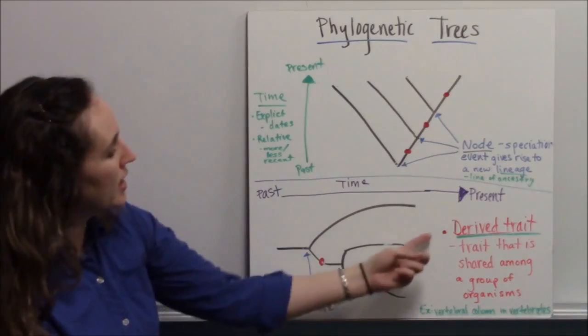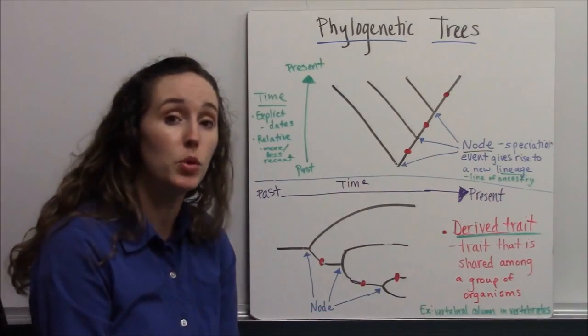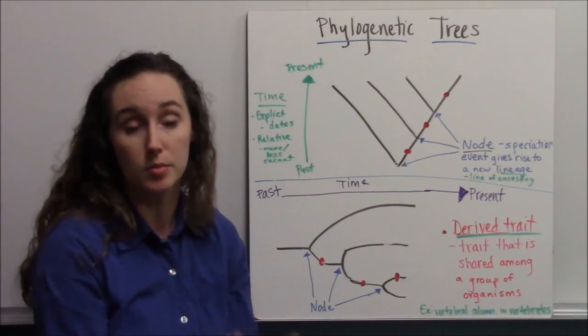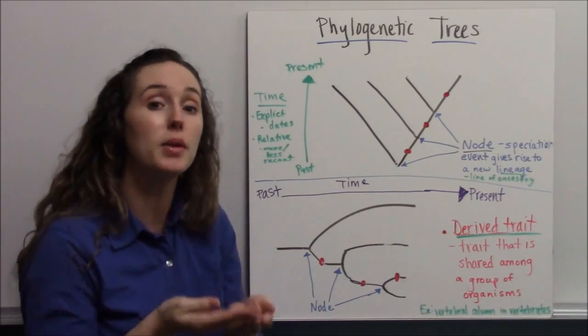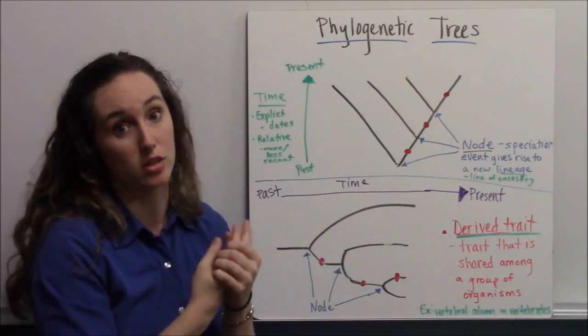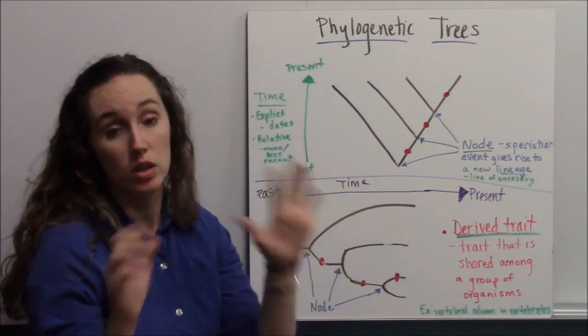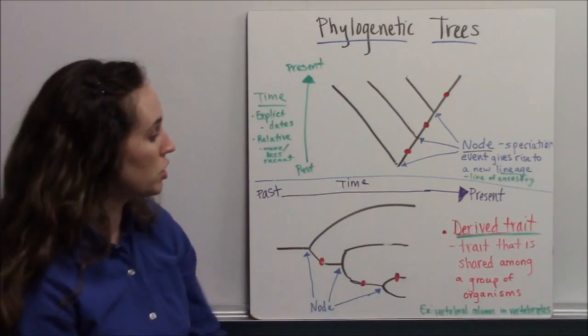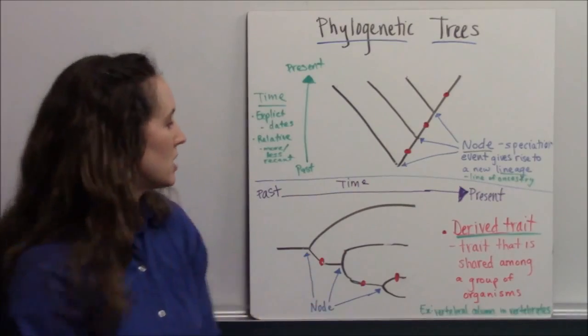An example is the vertebral column, a spine. That's shared. It's a derived trait. It's common among all vertebrate organisms—fish, salamanders, lizards, birds, mammals—all vertebrates share that derived trait that makes their group unique from invertebrates.